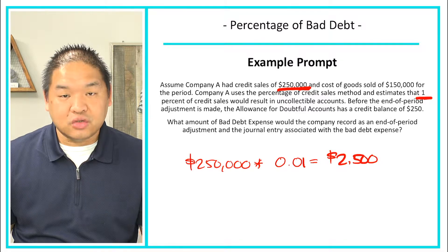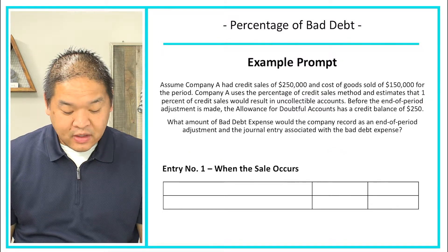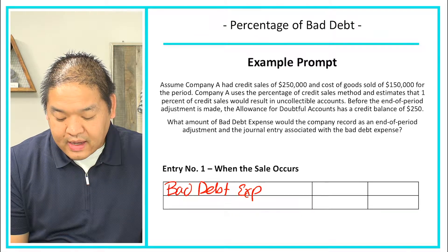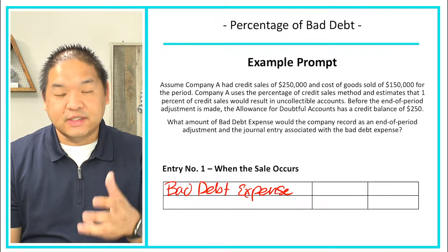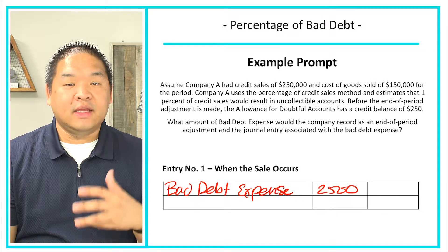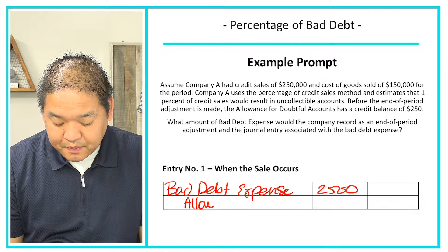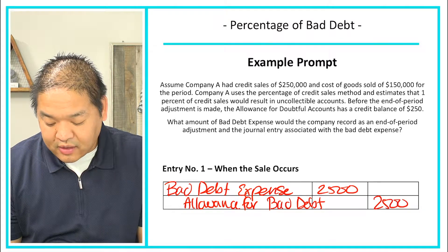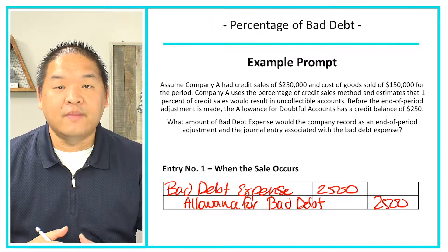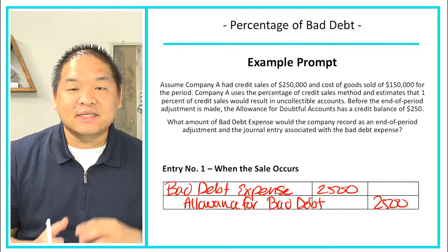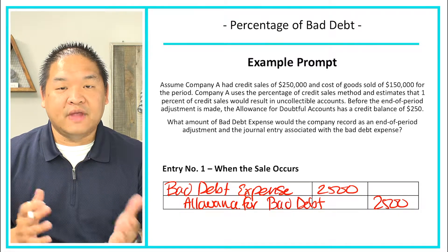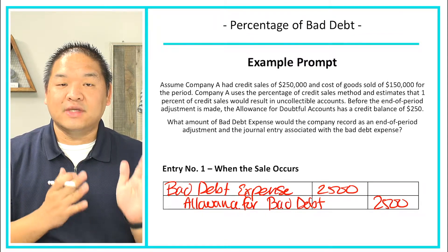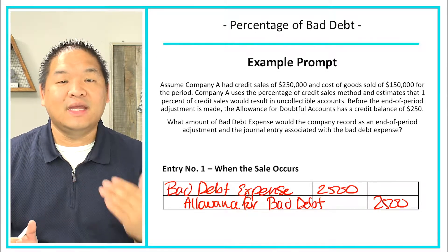Moving on to the journal entry, we would debit bad debt expense because we're increasing the expense — increasing it by $2,500. Then we're going to credit the allowance, the cookie jar account. The allowance for bad debt is a contra asset, and because it's a contra asset, it works opposite of a regular asset. An increase in the contra asset would be a credit rather than a debit, since normally when we increase an asset, it's a debit.